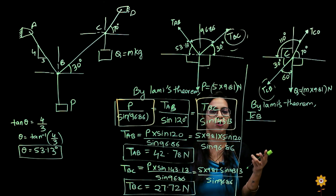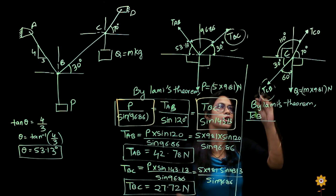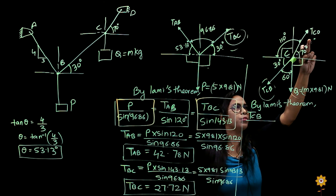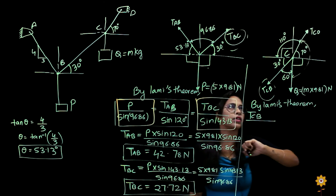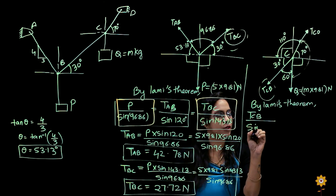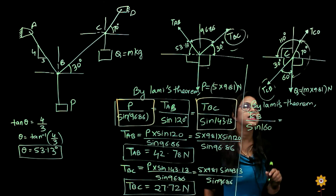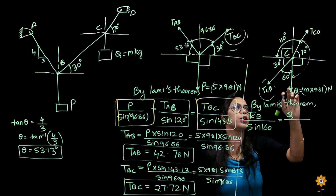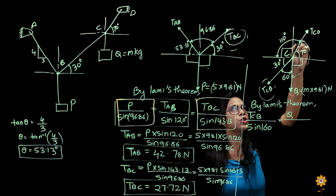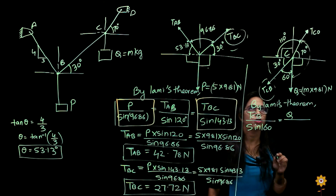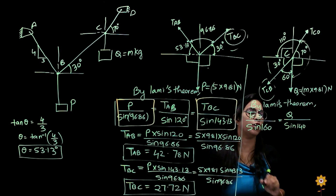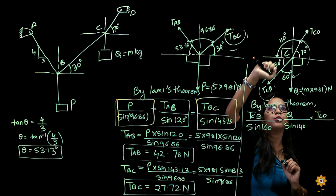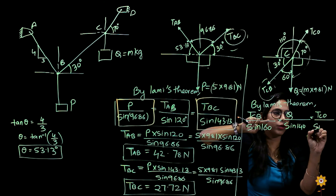By Lamy's theorem at point C: TBC is proportional to sine of the angle between the other two forces. TBC's opposite angle — between Q and TCD — is 90 plus 70, that is sine of 160. For Q (which is m into 9.81), the angle between the other two forces is 110 plus 30, so sine of 140. For TCD, the angle between the other two forces is sine of 60.